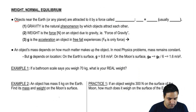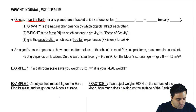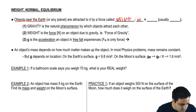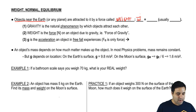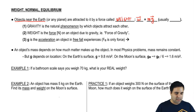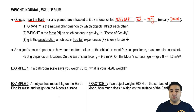Objects near the earth, or really around any planet, are attracted to it by a force called weight. Weight can be written as a little w. It's a force, so it's a vector. Weight is defined as simply mass times g, where g is the acceleration of gravity. This is usually down — we're going to assume that the weight is pulling you down.